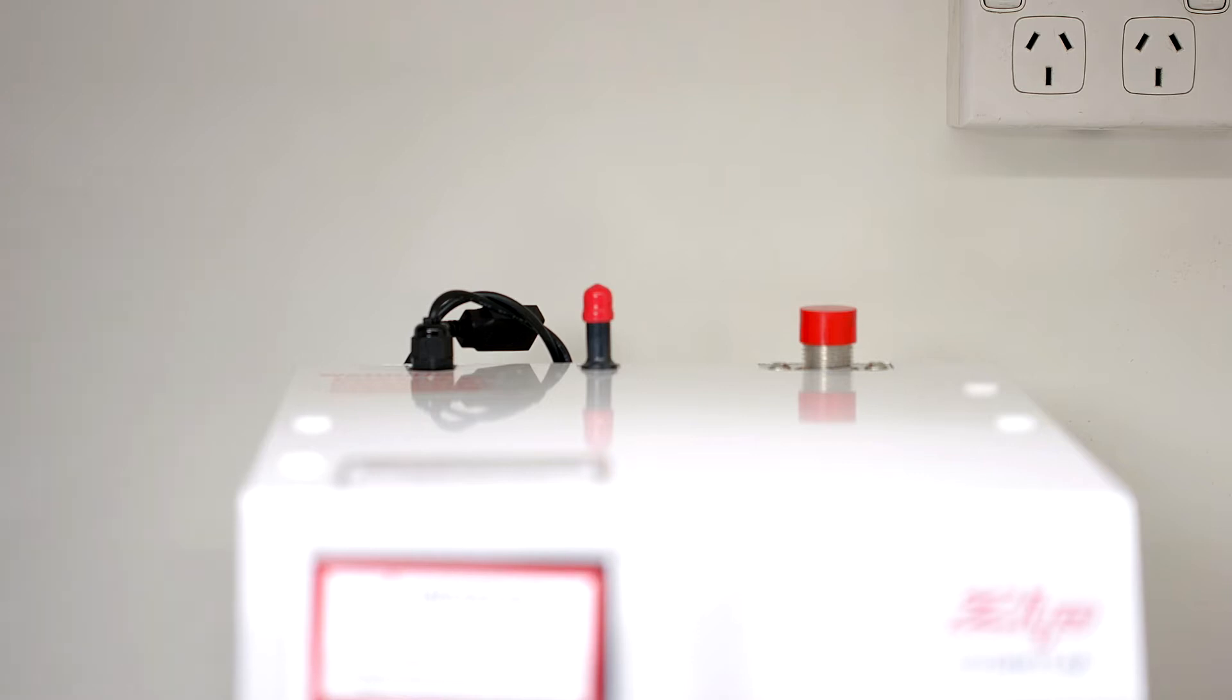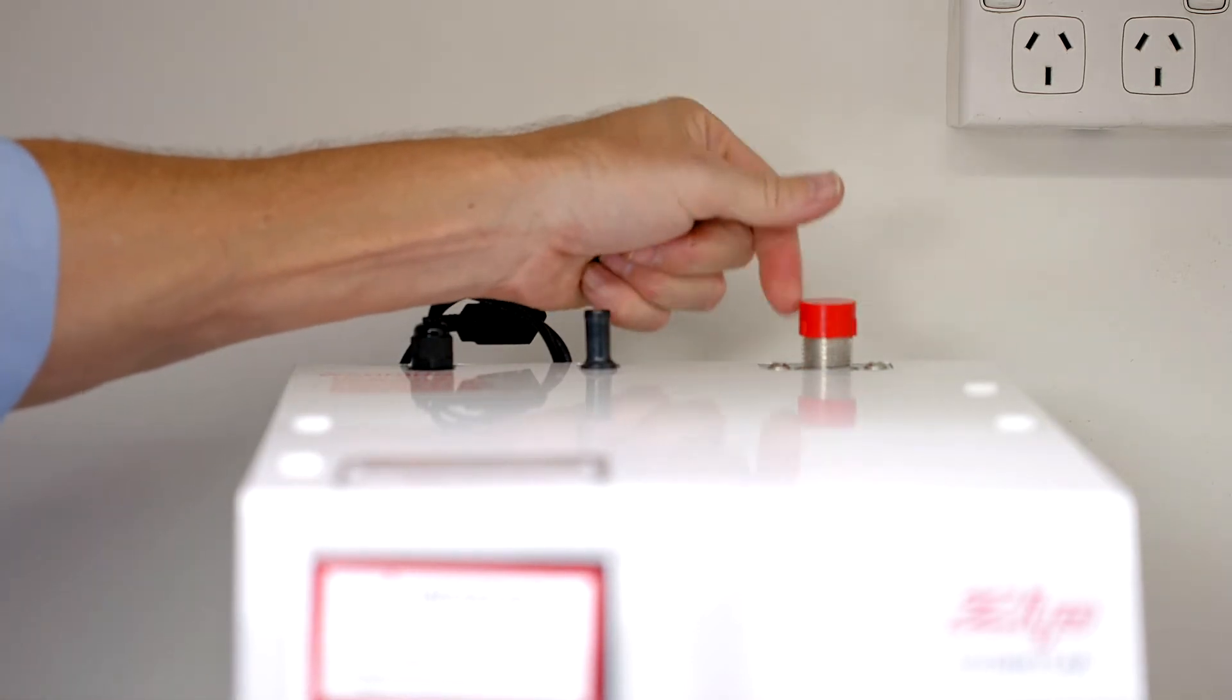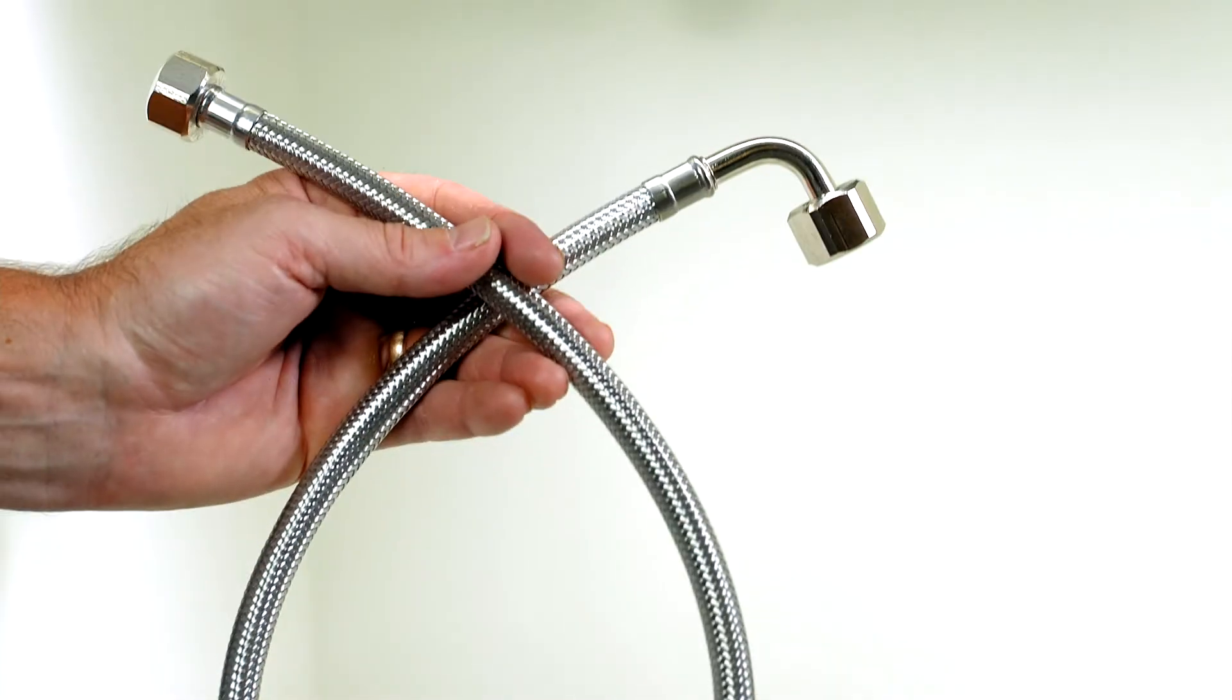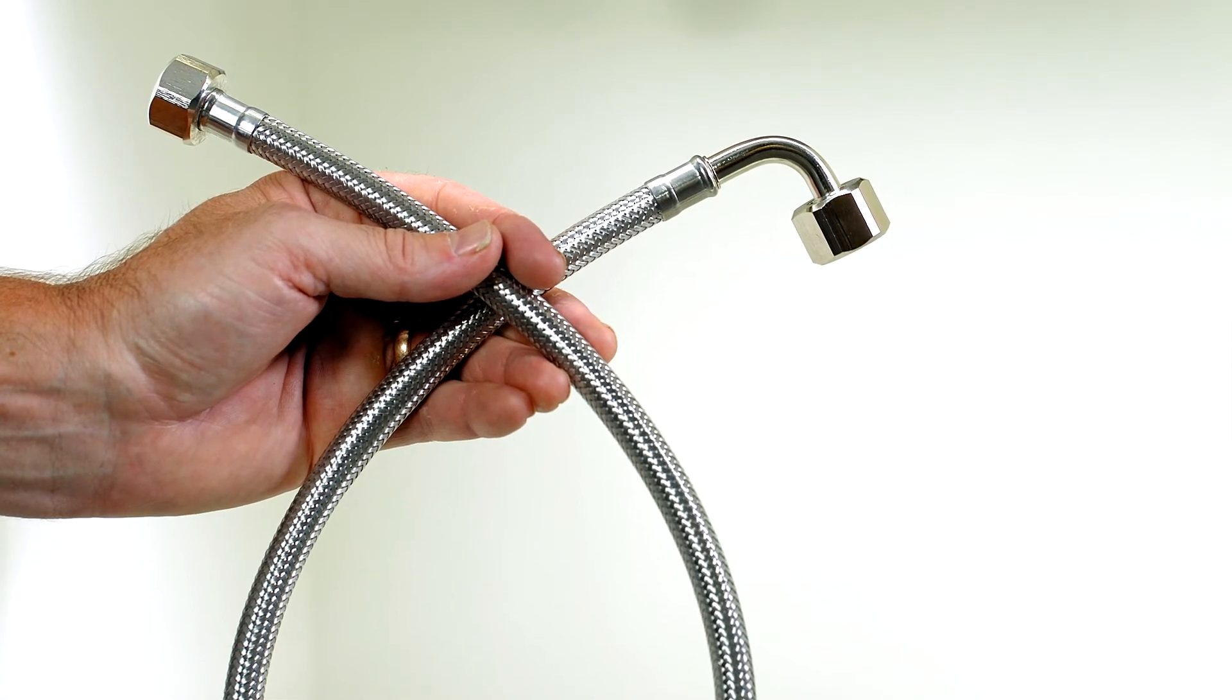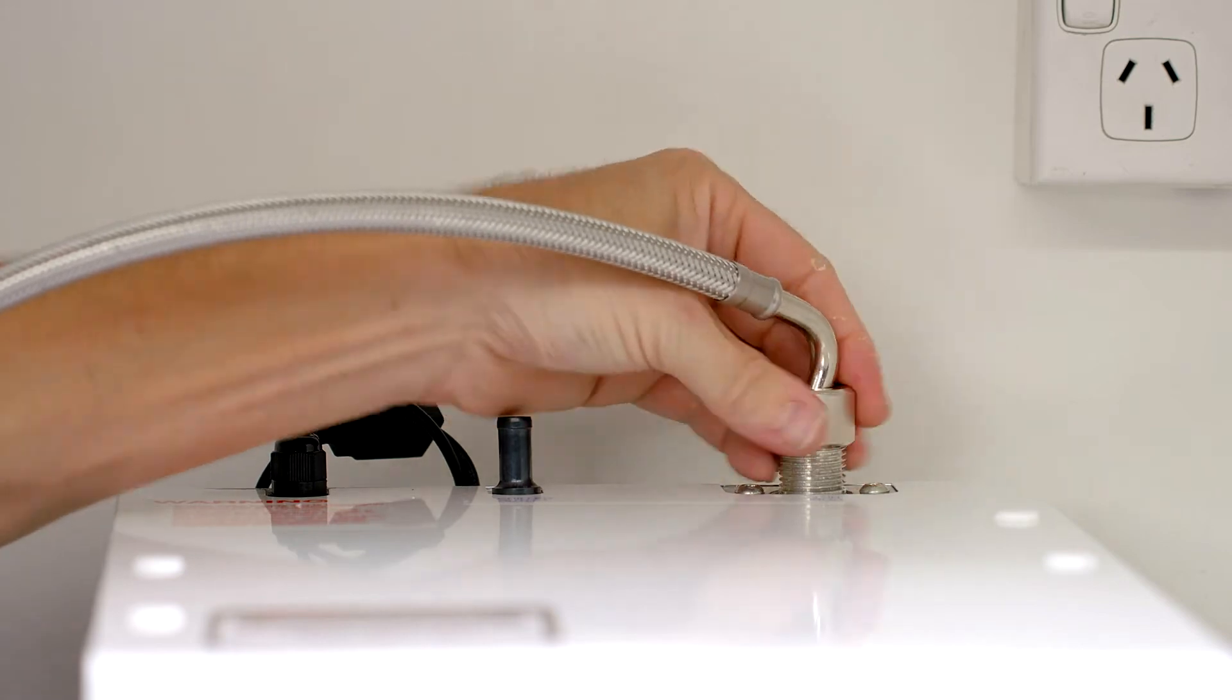Remove the dust caps from the outlets and remove the cap from mains in. Next, we need to connect the command center to the mains water supply. Use the supplied braided hose for this connection. Connect the end with the elbow to the mains in on the command center.